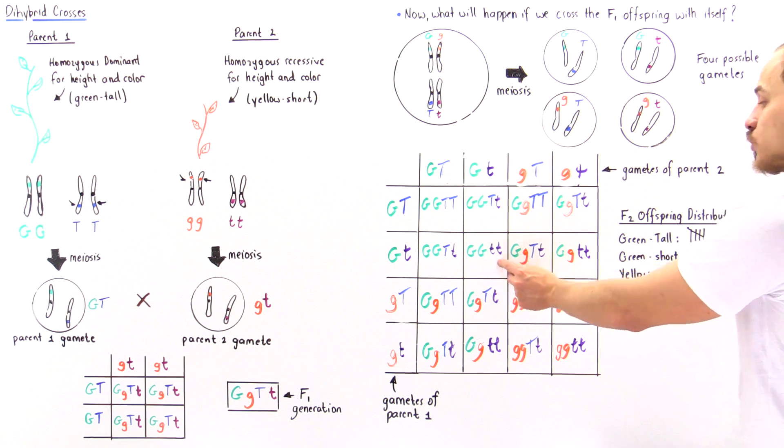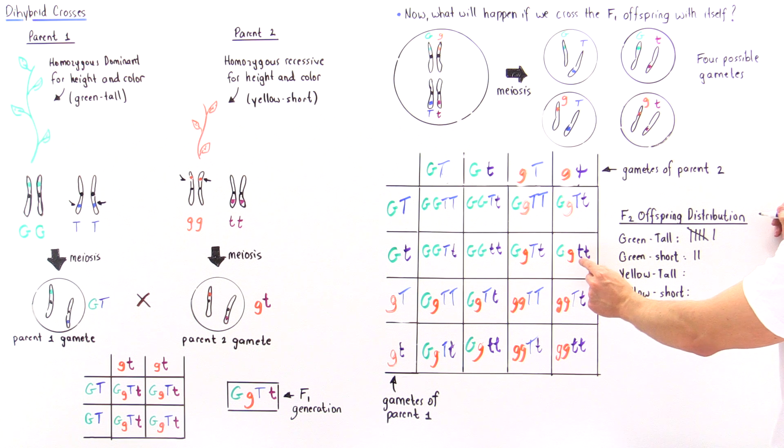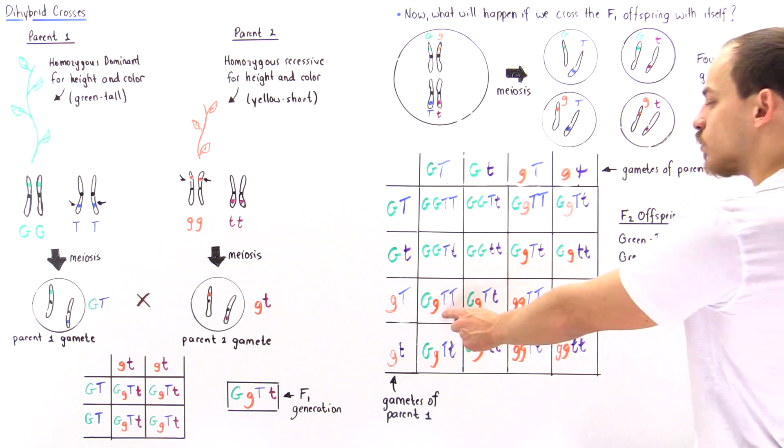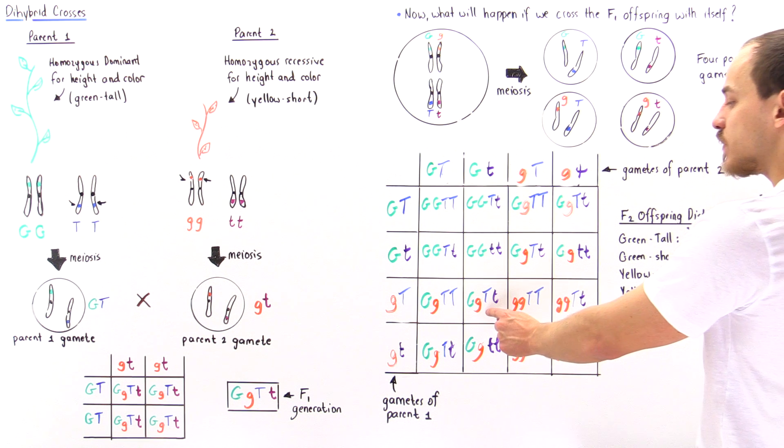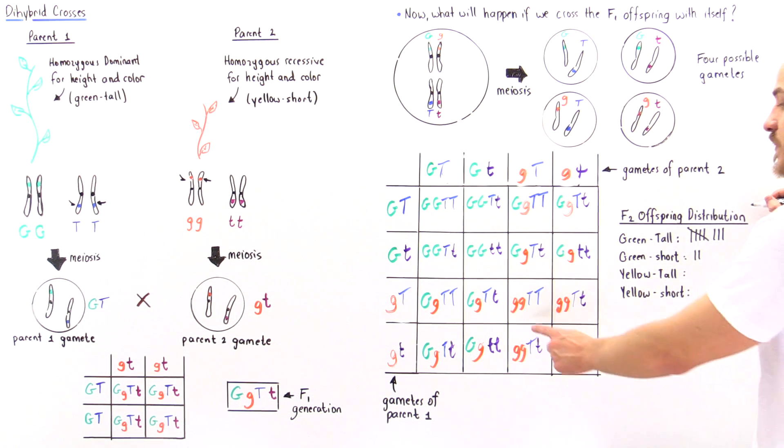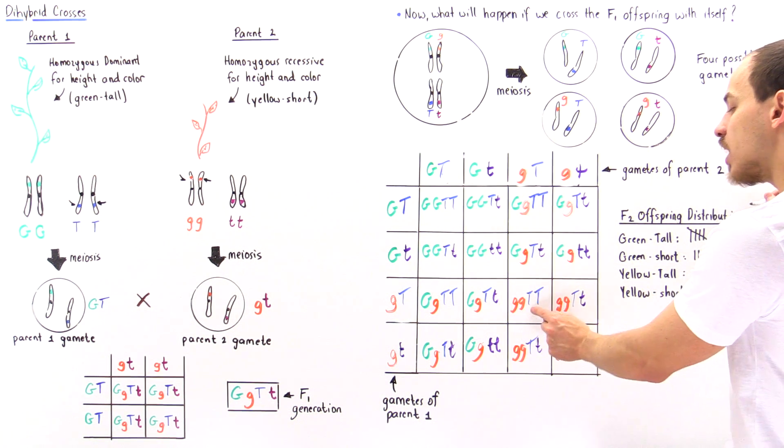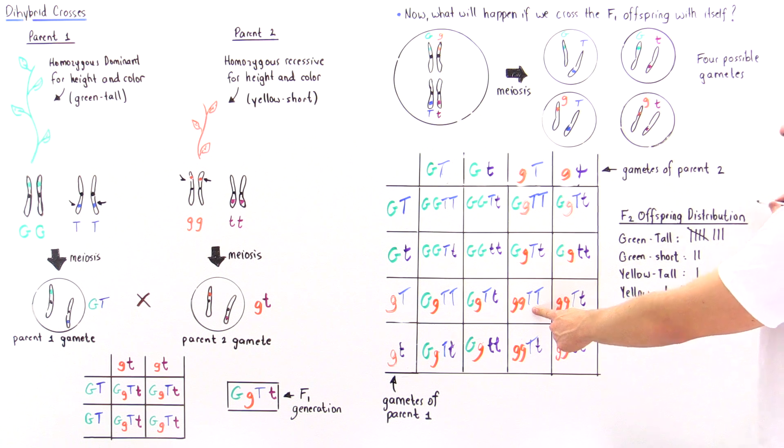We have short because we have two recessive t's, so green and short gets one. Once again we have green and tall, we have green and short, right, because this is still dominant over the lowercase g. But we have two recessive here so we'll have short. Here we have green and we have tall, once again green and tall.